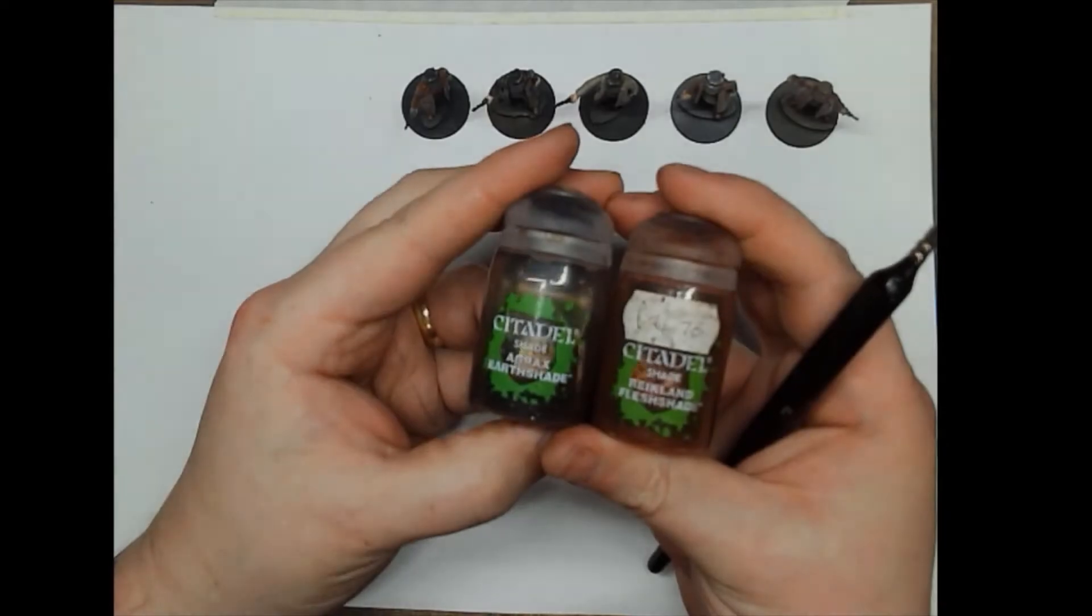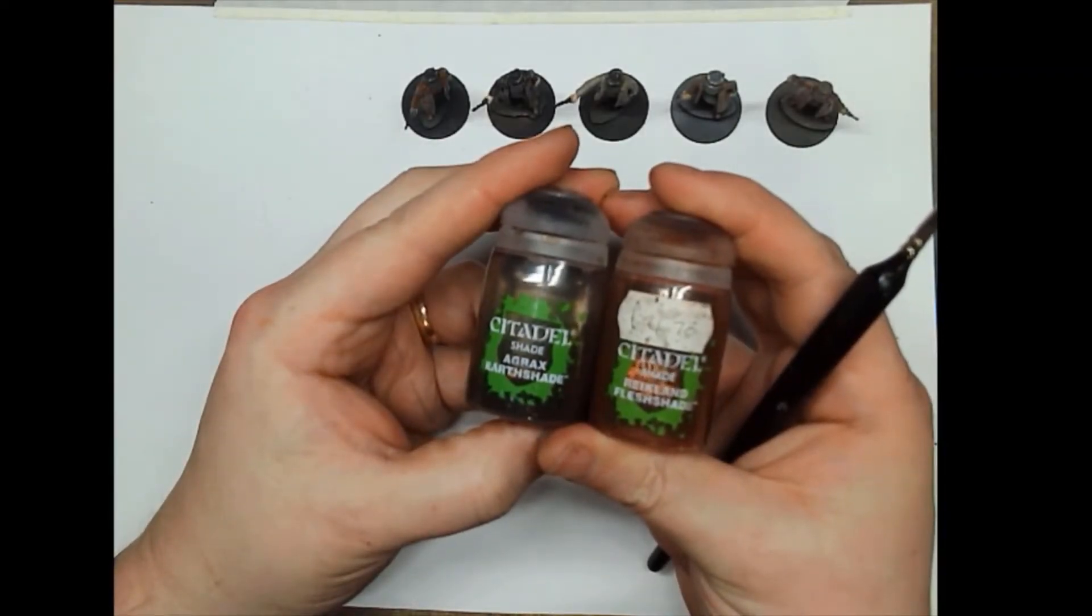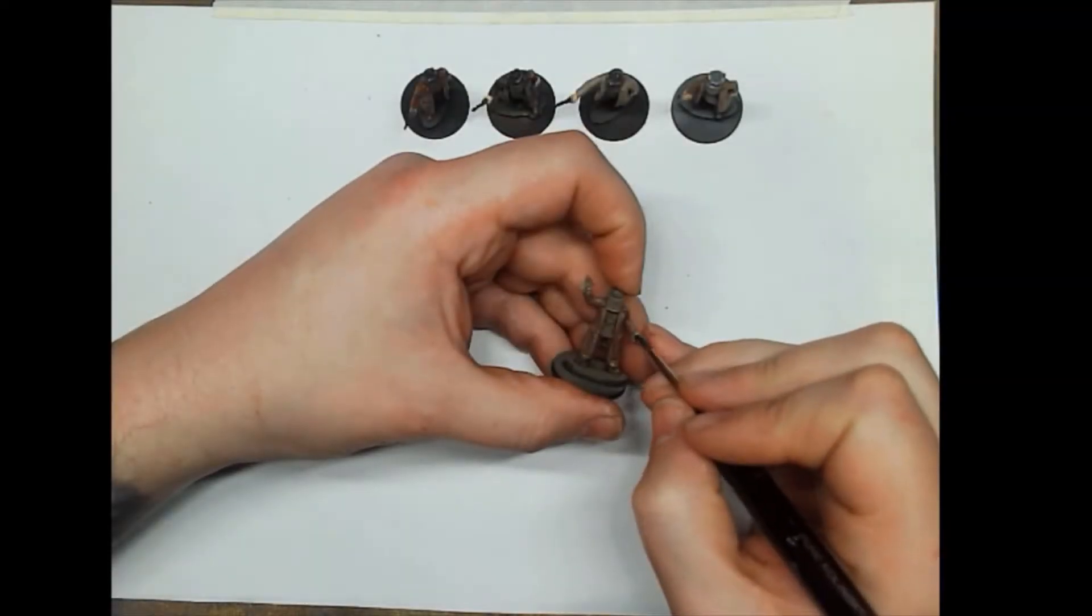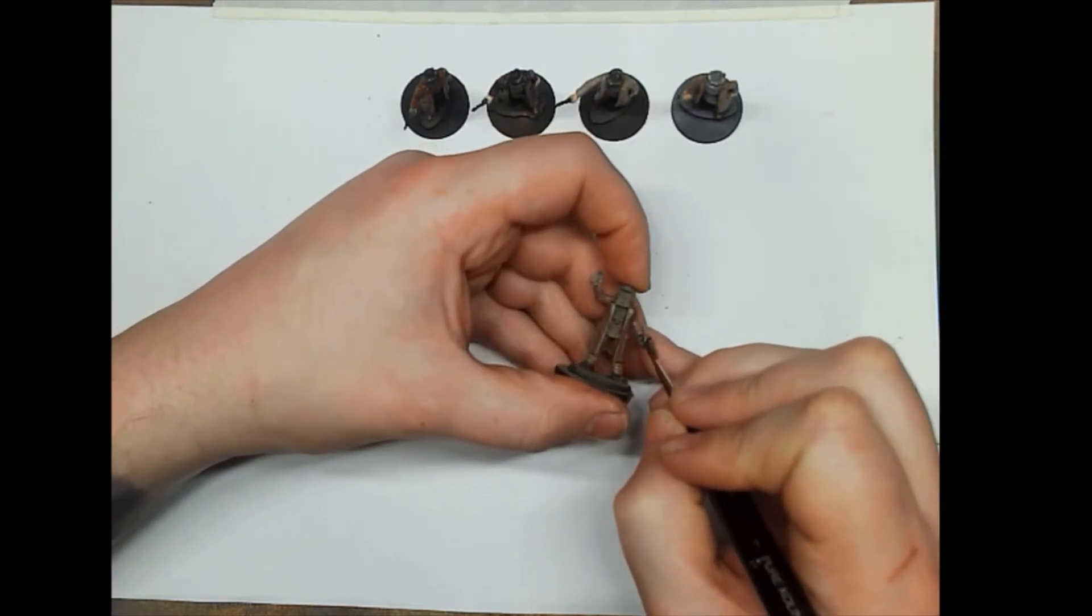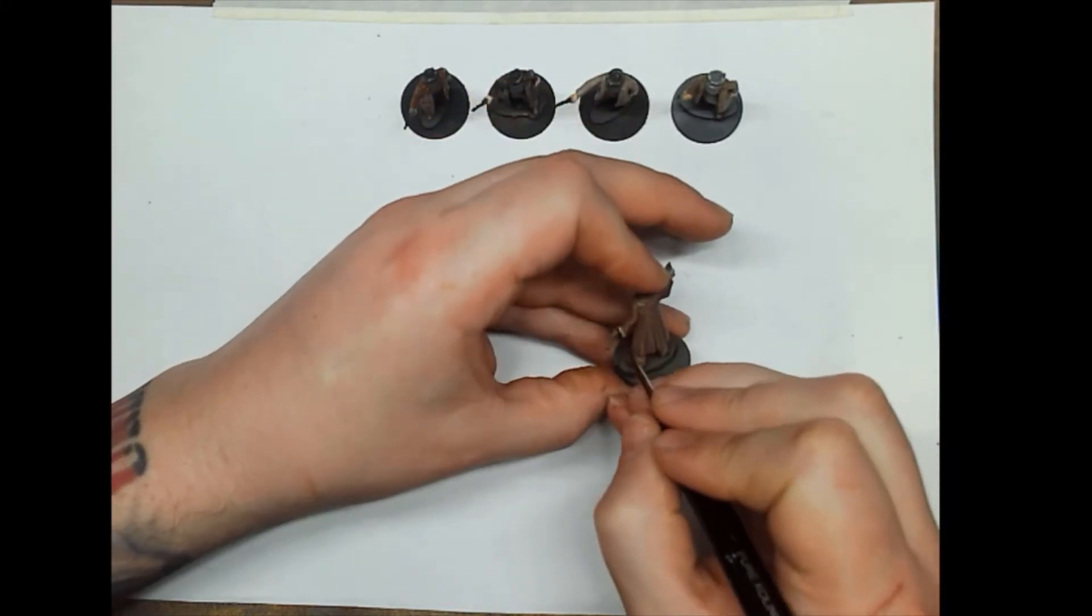Now some shades: Agrax Earthshade and Reikland Fleshshade. So the Reikland Fleshshade will go over the skin tones, and the Agrax Earthshade is to go over the gloves.